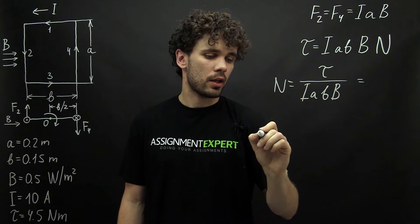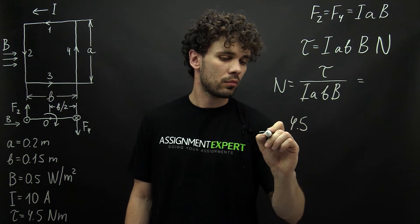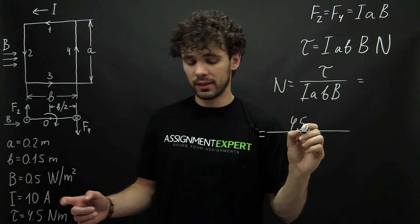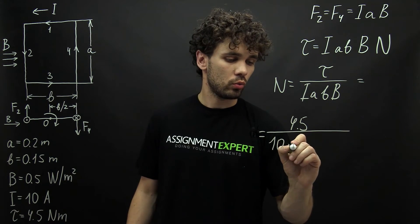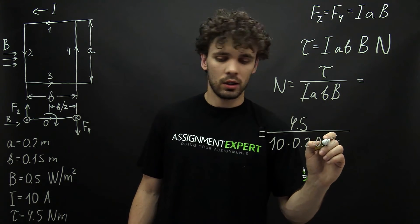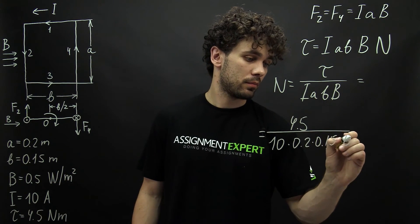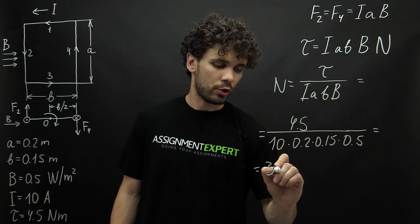And we get 4.5 divided by 10 times 0.2 times 0.15 times 0.5. And this gives us 30.